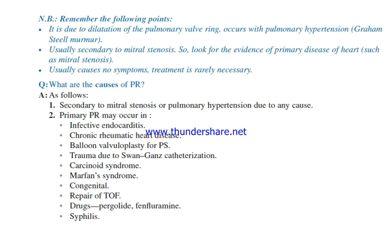We should remember the following points: pulmonary regurgitation is due to dilatation of the pulmonary valve ring; it occurs with pulmonary hypertension; the Graham Steell murmur is usually secondary to mitral stenosis. So look for evidence of primary disease of the heart such as mitral stenosis. It usually causes no symptoms and treatment is rarely necessary.